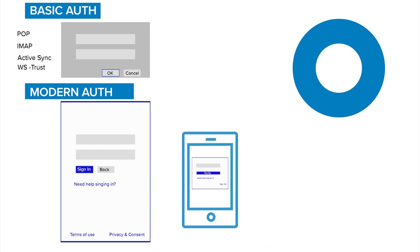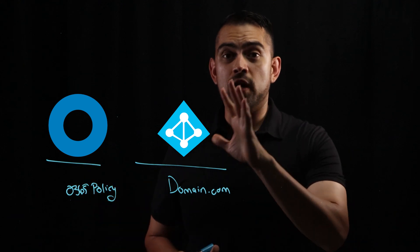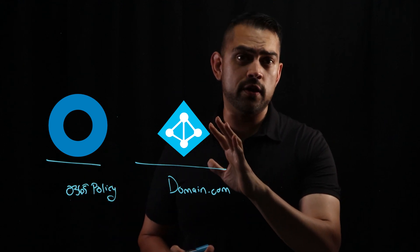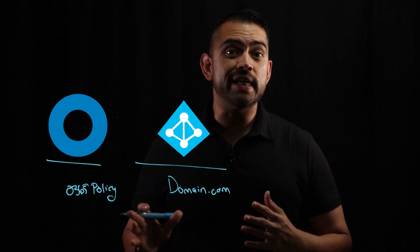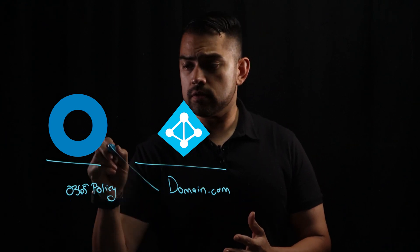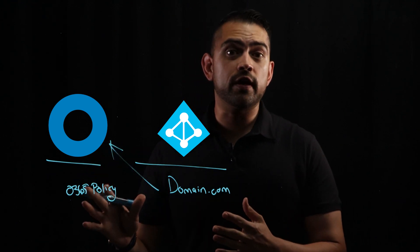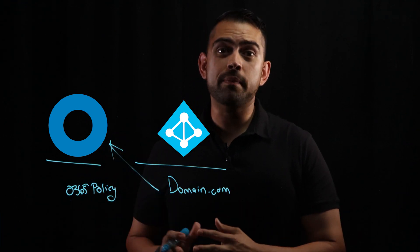Both authentication types can occur with a federated domain. With domain federation, we have two entities: Okta as the IDP and Microsoft Azure AD as the service provider, which is where our domain lives. Because of federation, any traffic destined for this domain will be automatically routed to Okta for authentications. When traffic comes in, we look at the originating endpoint to determine what type of traffic this is — either Modern or Basic Auth.